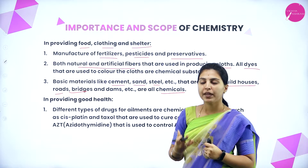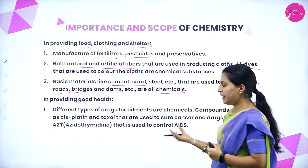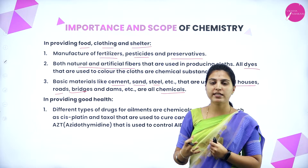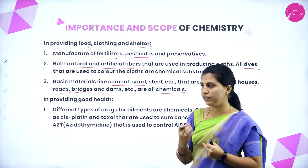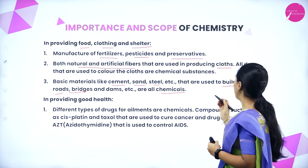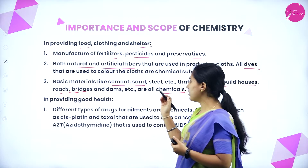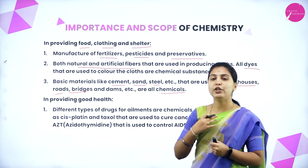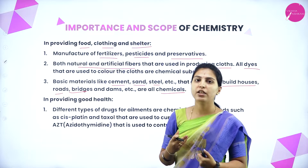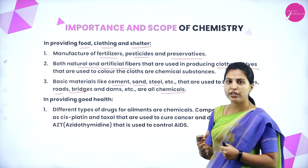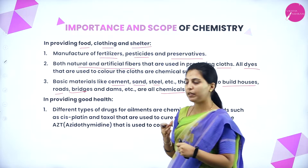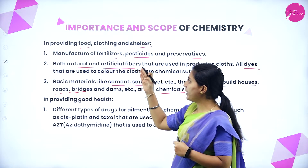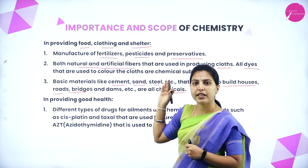Cement is a chemical substance. Steel is made by producing alloys — mixtures of various metals — done in industries. Alloys and innovative designs of houses or bridges all depend on chemistry. These are the important ways chemistry provides food, clothing, and shelter.